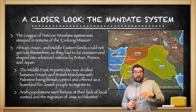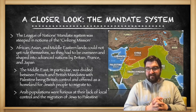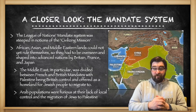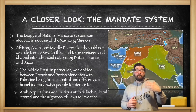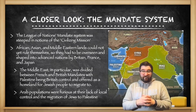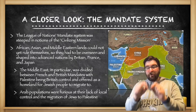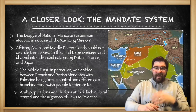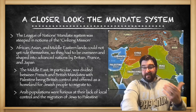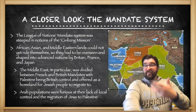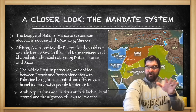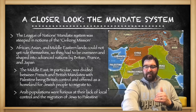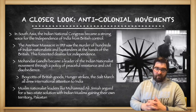The British during World War I had made a promise to the Jews of the world that Palestine could be a national homeland for Jews. Arab populations were furious at their lack of local control — which they believed had been promised to them during the First World War — and at the influx of Jews migrating to Palestine in the years after the war.